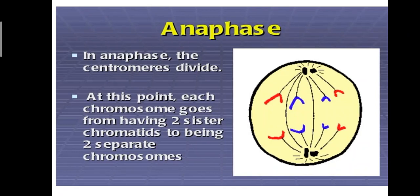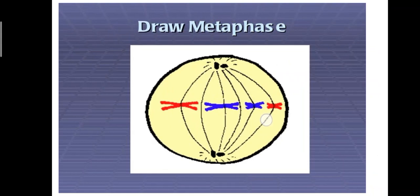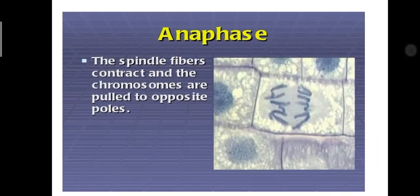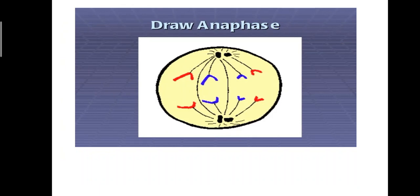Then anaphase. In anaphase, the centromere divides. At this point, each chromosome goes from having two sister chromatids to being two separate chromosomes. Here, you can see in the diagram, the spindle fibers contract and the chromosomes are pulled to opposite poles. Now you can draw a diagram of anaphase.